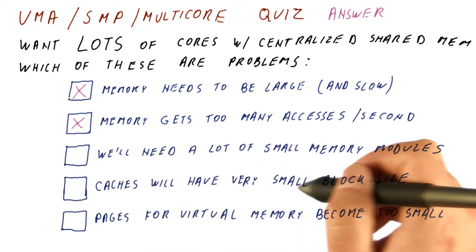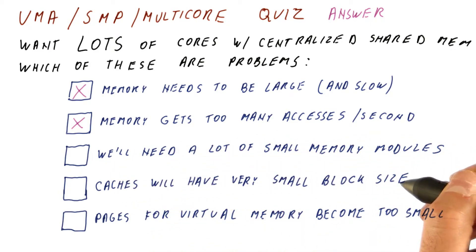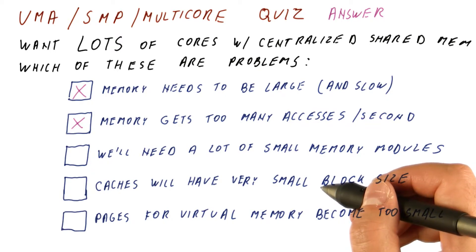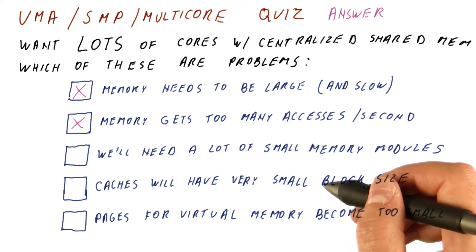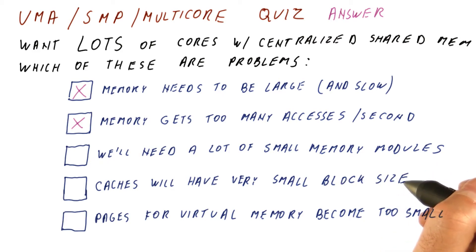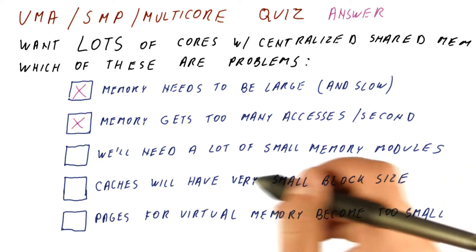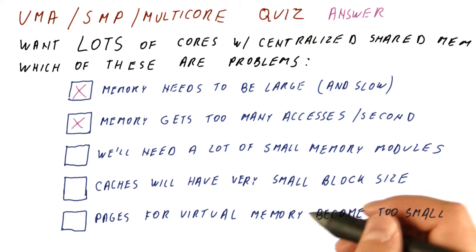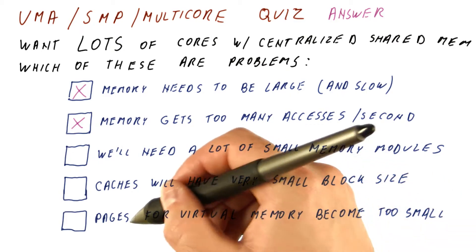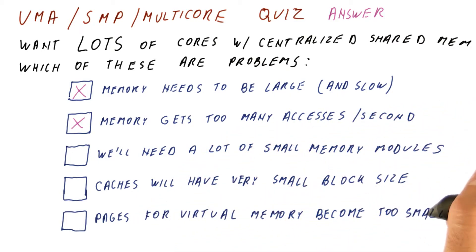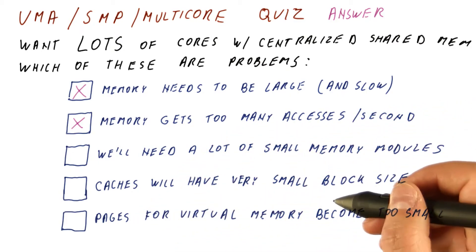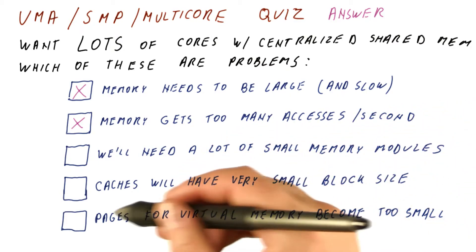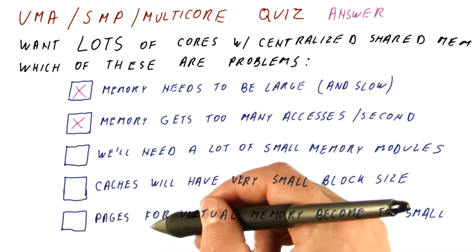Caches will have very small block size — this is not true either. All of the caches in all of the cores can have any block size they want; the block size is not divided among the cores. Pages for virtual memory become too small — same thing. We can have any page size we want.